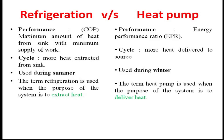Because we have different mathematical relationships for performance factors, we have different names. For heat pump, it is called Energy Performance Ratio, or EPR, and for refrigeration, it is known as Coefficient of Performance, or COP. For refrigeration, more heat is required to be extracted from the sink; for heat pump, more heat is required to be delivered to the source.